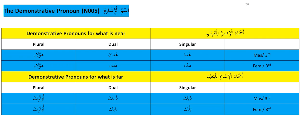So if the object you're pointing to is masculine singular, for example, if I point to a single man I say 'hadha rajulun' — this is a man.